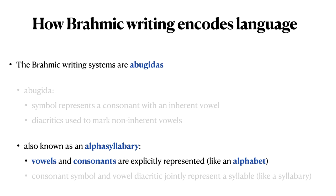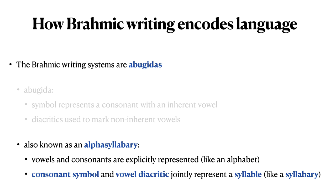In an alpha-syllabary, vowels and consonants are explicitly represented. This is similar to an alphabet. But unlike in an alphabet, in an alpha-syllabary, the consonant symbol and the vowel diacritic combine into a single joint symbol, where the joint symbol represents a syllable. This is the syllabary aspect.